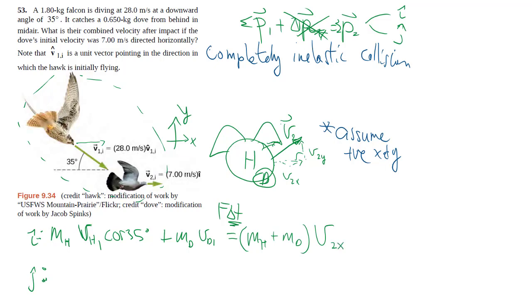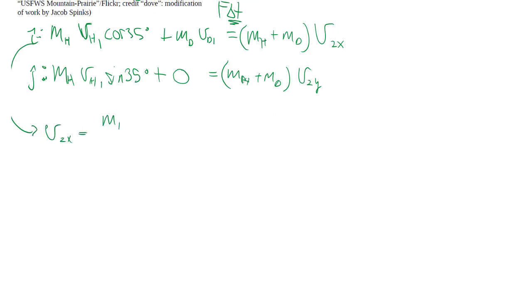For the j component, very similar. In this case, the dove has no vertical component of the velocity and therefore no momentum. We can use that to solve for v2y. Let's do that, punch in some numbers, get some answers.